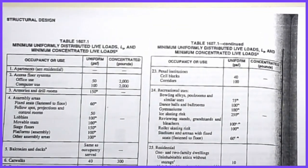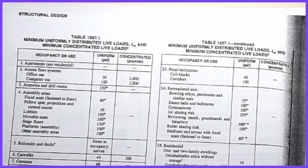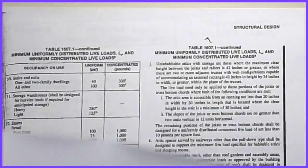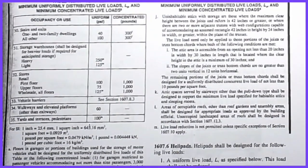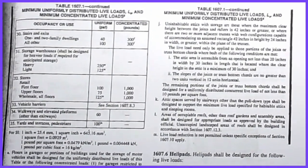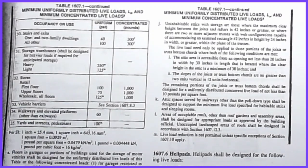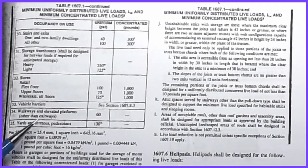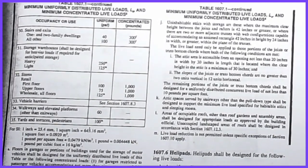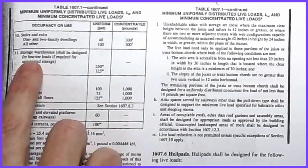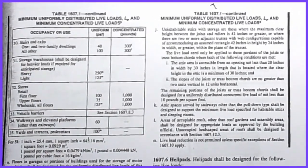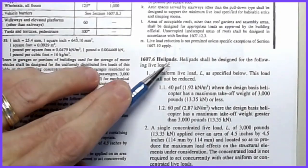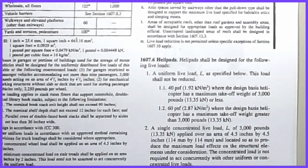From IBC 2015 Table 1607.1, you get a uniform load and a concentrated load effect to account for. Other notable values include retail stores at 100 psf on the first floor and 75 psf for higher floors, as well as elevated walkways and storage mezzanines. They even include guidelines for designing helipads as a special case.